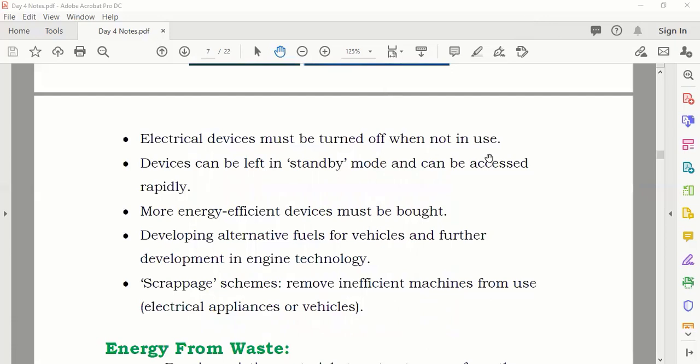Okay, now what are the other ways we can save energy? Electrical devices must be turned off when not in use. Even if you are not using anything, it should be turned off, especially the light or air condition. If you are not using them, you are not in the room, so you should switch off everything.